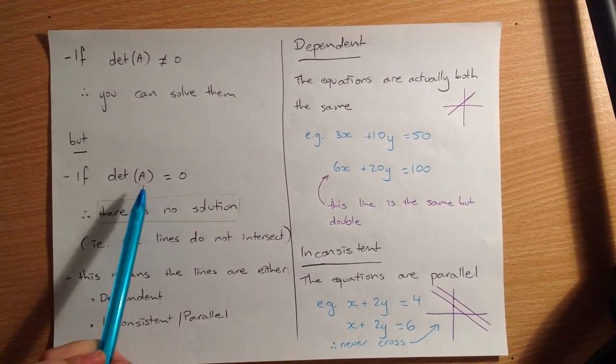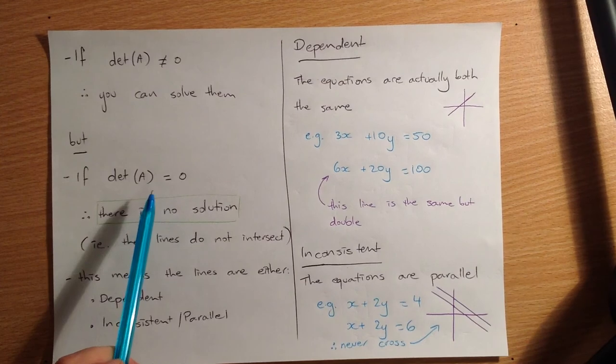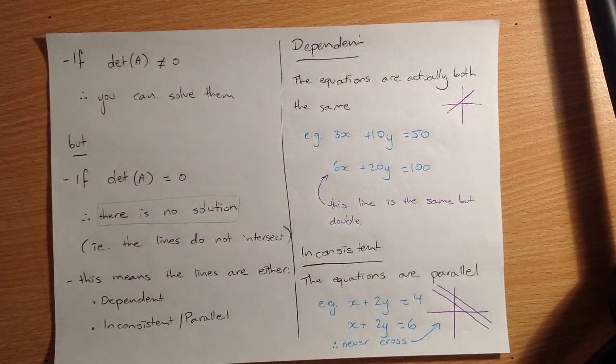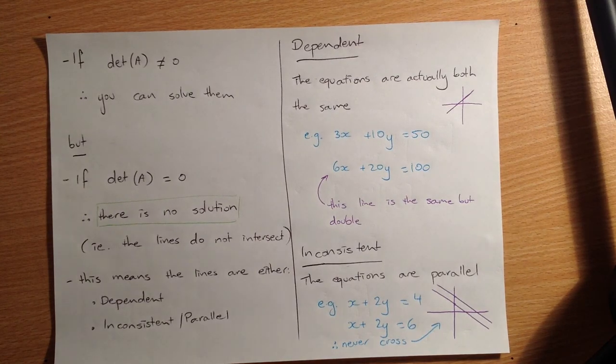That'll be a lot easier to see in a y equals mx plus c style graph. Either way, all you need to remember is if the determinant is zero, then there's no solution. So that bit there. If the determinant is zero, then there is no solution. And that's it for simultaneous equations.